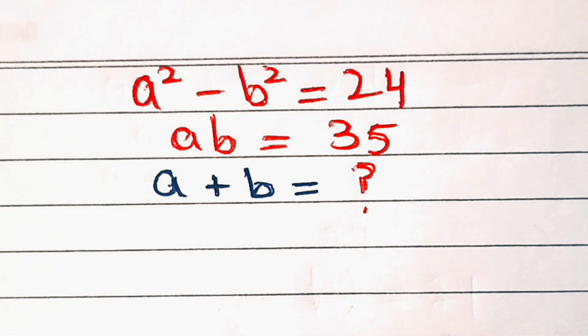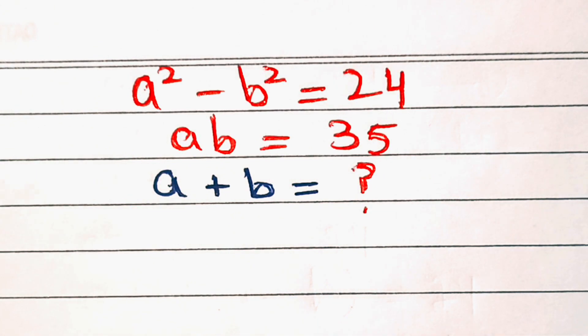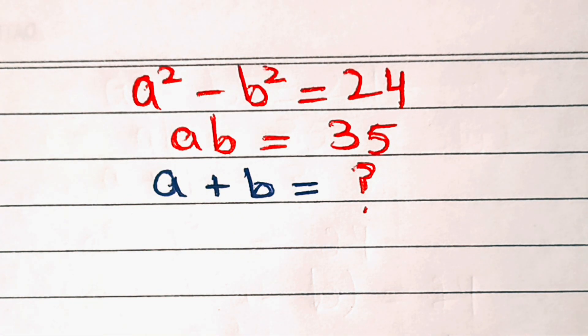Hi everyone. In this video we have a nice algebraic problem: a squared minus b squared equals 24, a times b equals 35, and we need to figure out the value of a plus b.